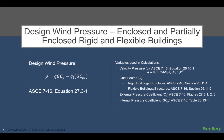Before we create our wind load definitions for the walls of our enclosed building structure, let's first take a look at the calculations that RAM Elements will perform to arrive at the design wind pressures. RAM Elements will calculate your design wind pressure according to the ASCE 7-16 equation 27.3-1. Through this process, it will consider the velocity pressure, the gust factor, the external pressure coefficient, and the internal pressure coefficient. We do recommend that you have your ASCE 7-16 available as a reference when creating your wind definition to ensure that all of your variables are entered correctly.